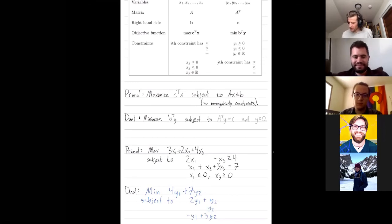All right. So I always compare a transpose times y to the vector c. So vector c is 3, 2, 4. So I compare this to the vector 3, 2, 4.